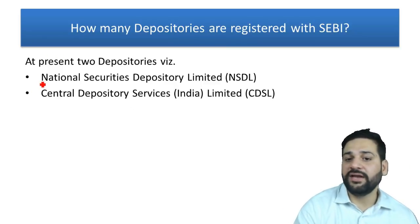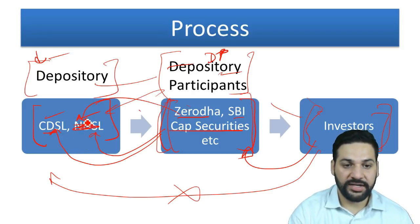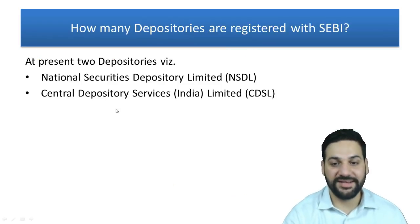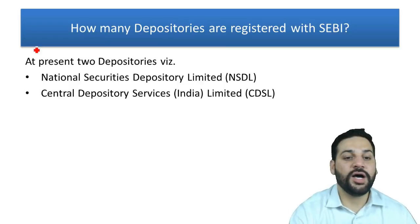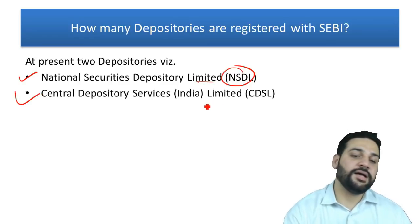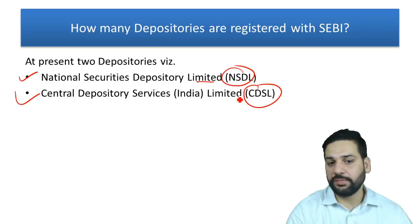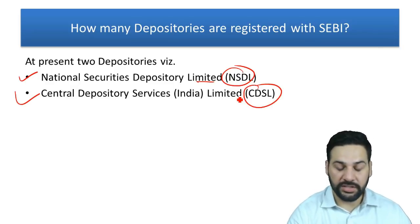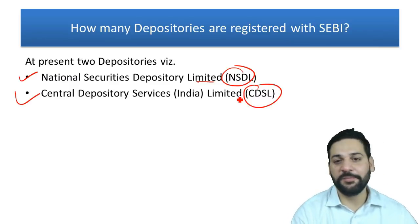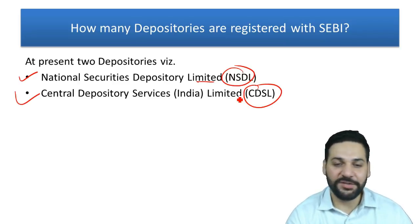The full form of NSDL - not NDSL - is National Securities Depository Limited. CDSL stands for Central Depository Services Limited. Please remember these full forms. Most investors and DP employees don't even know the full forms, but you should because it can appear in exams.